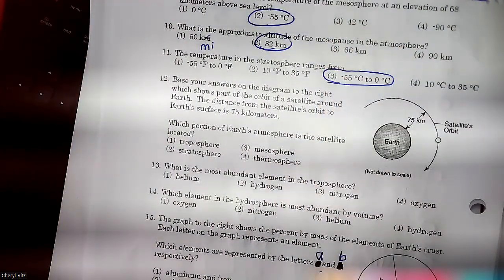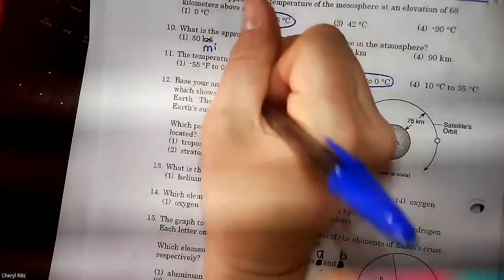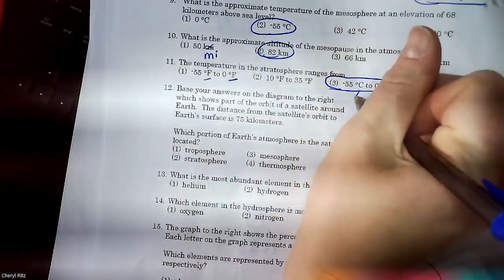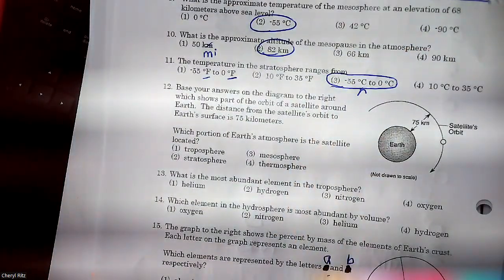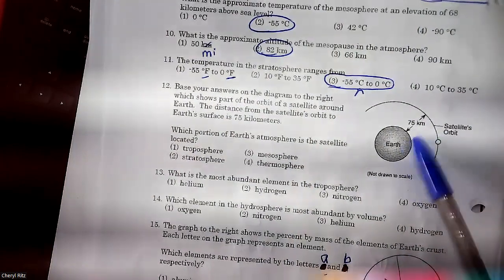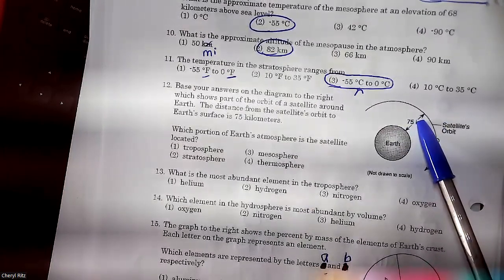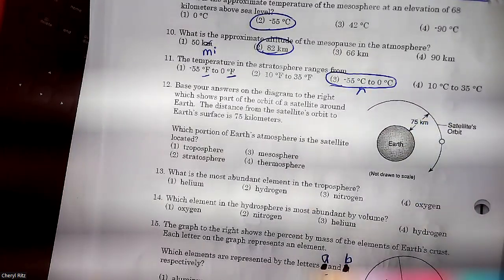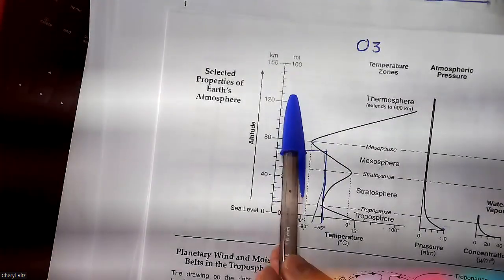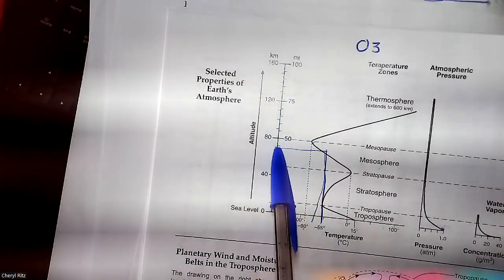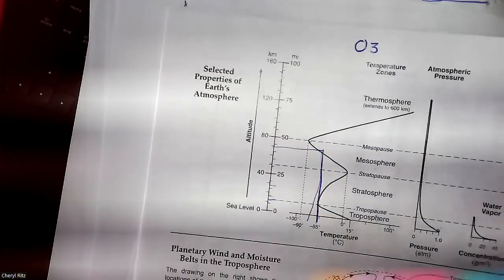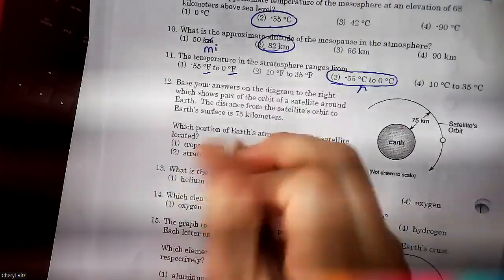Who put 1? What's wrong with answer 1? It's in Fahrenheit — we need Celsius. Question 12: they gave us a picture and told us satellites are 75 kilometers above Earth's surface. 75 kilometers — not miles, kilometers — puts you in the mesosphere. Answer 3.